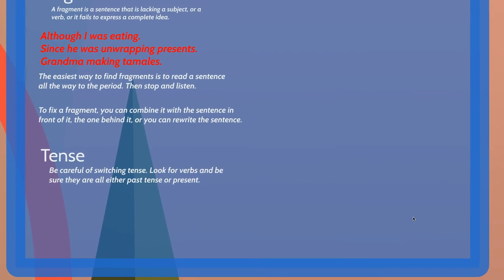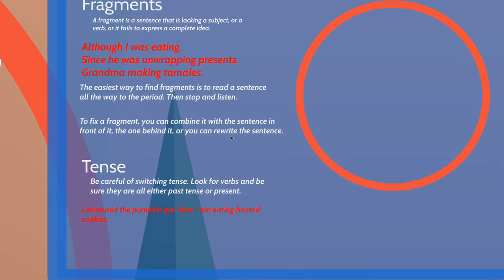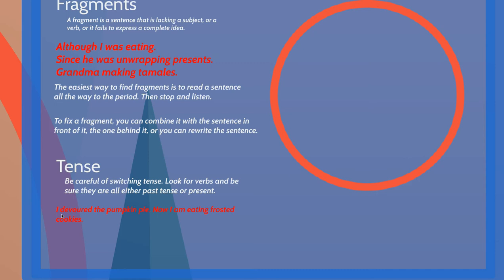Here's another thing to watch out for in these essays: tense. Many students go back and forth between present tense and past tense. For example: 'I devoured the pumpkin pie. Now I am eating frosted cookies.' Notice here 'devoured' has an -ed ending — past tense — while 'am eating' is present tense. Between those two sentences we've switched tense, so be very careful of that. I'd say maybe 50% of my students writing this essay tend to switch tenses back and forth. The easiest way to find tense shifts is to look at just the verbs in the sentences and make sure they're all in the past tense. Most of these essays should be written in the past tense.